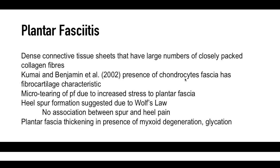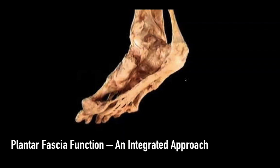Plantar fascial thickening shows the presence of myxoid degeneration — which we also see in the Achilles tendon — as well as glycation. Under ultrasound we can measure the thickness of the plantar fascia. When you start to see thickening, especially in your diabetic patients, that tells you there is increased glycation happening. Glycation — the oxidation of glucose creating free radicals and AGEs (advanced glycation end-products) — creates non-enzymatic crosslinks in collagen, making it haphazard and almost like scar tissue. This can actually serve as a screening tool for the glycation state of a diabetic patient.